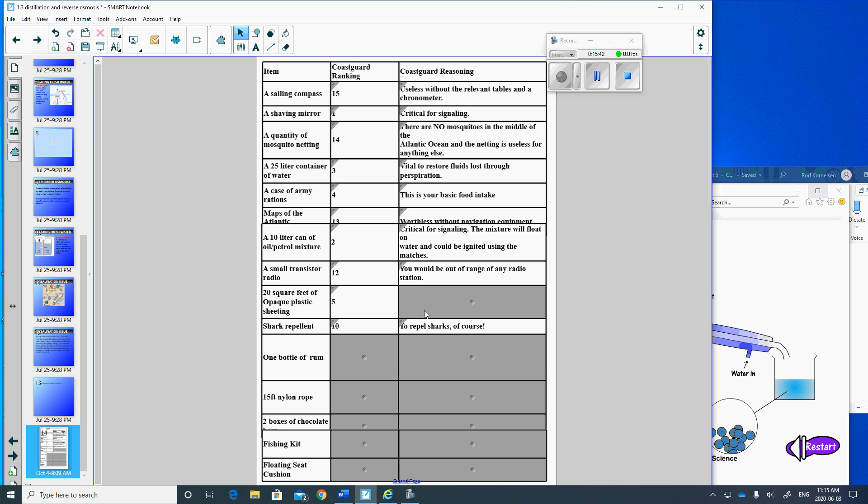20 feet of plastic. Very useful. You can use that to, guess what, collect rainwater. And to shelter you from the wind and waves. Floating seat cushion. Could be kind of useful in case your friends push you overboard.